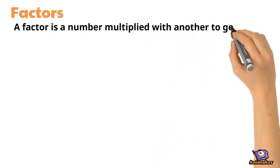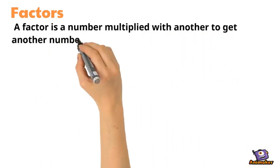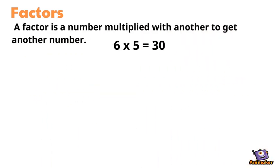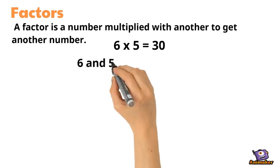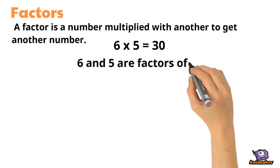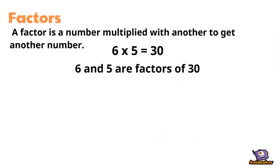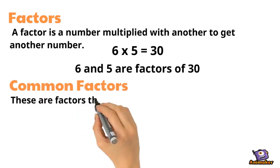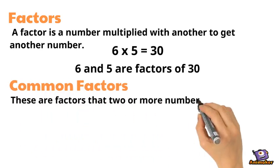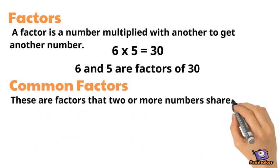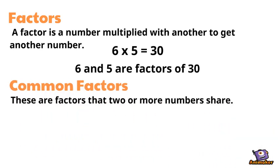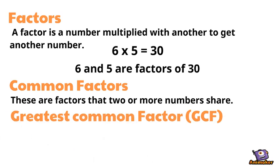A factor is a number multiplied with another to get another number. 6 times 5 equals 30, so 6 and 5 are factors of 30. Common factors are factors that two or more numbers share.